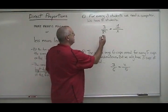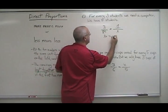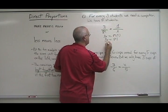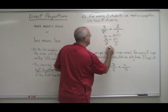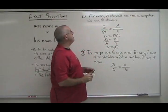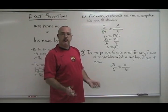If we use the fundamental rule of proportions to solve this, we find out that we need 27 computers if we have 81 students. And that answer makes sense.